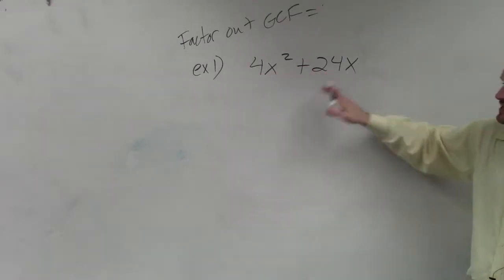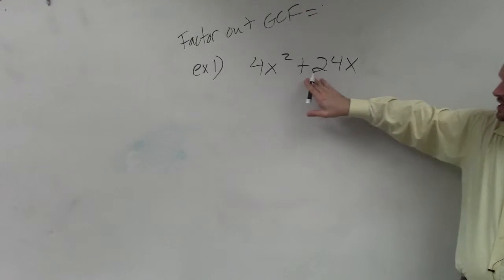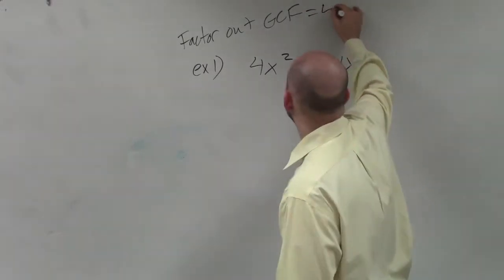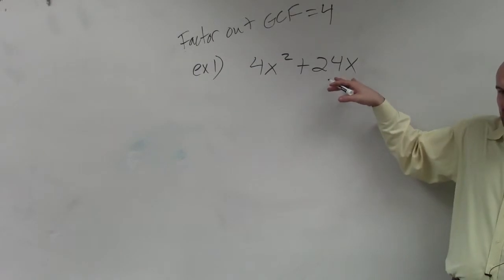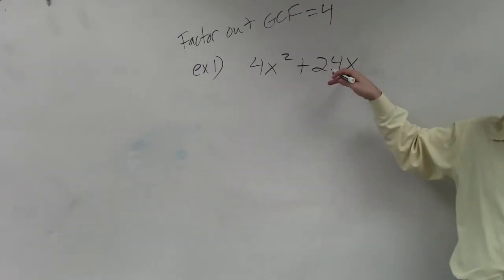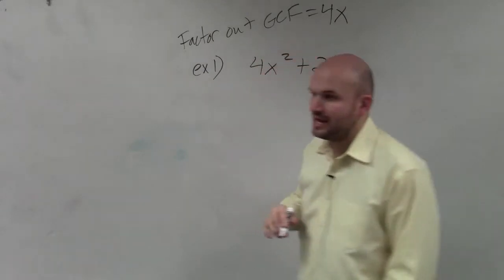In this case, we can say that I know 4 divides into 4x squared, as well as 24x. So I have the 4. And the largest variable is going to be x, because x squared doesn't divide into x. So the largest term is going to be 4x.